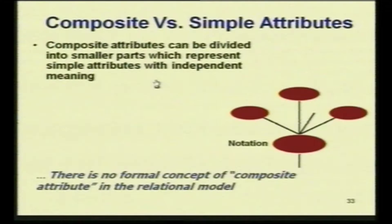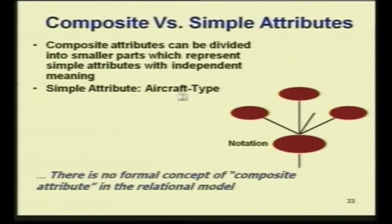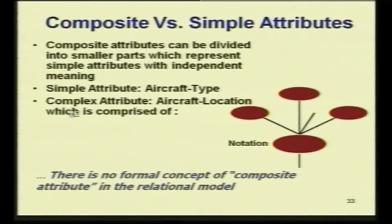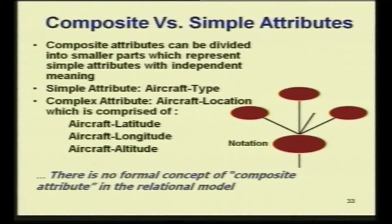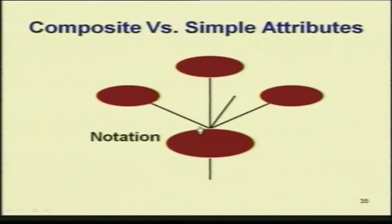Let us look at composite versus simple attributes. A composite attribute can be divided into smaller parts which represent simple meaning attributes with independent meaning. For example, aircraft type is a simple attribute, while aircraft location — comprised of latitude, longitude, and altitude — is a composite attribute. Composite attributes can be divided into smaller parts. In the notation, you represent an attribute with all its component sub-attributes.